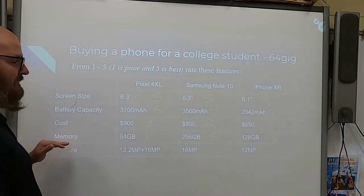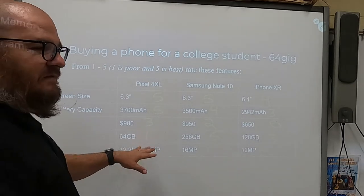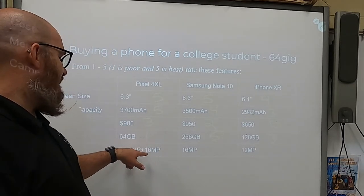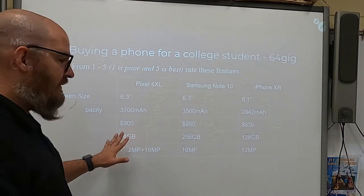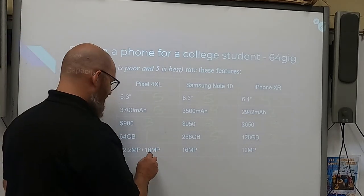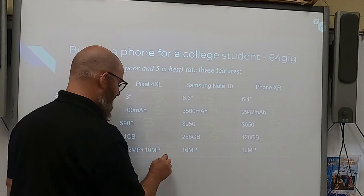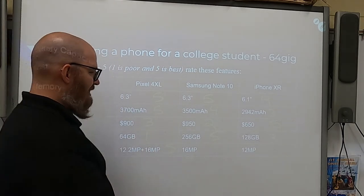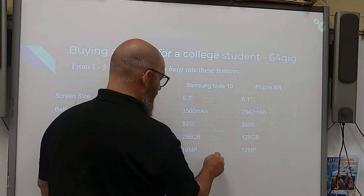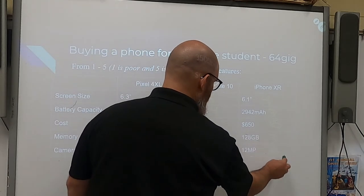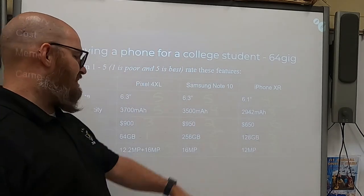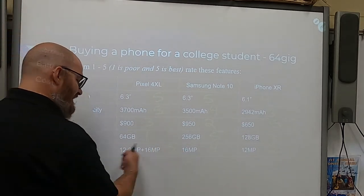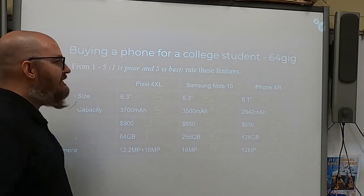Last thing: camera. Megapixels is millions of pixels. One of these actually has two cameras — you could probably do 3D with it. 16 megapixels gets a five, along with the dual-camera phone, that's also a five. We'll give the next one a four. And 12 megapixels gets a two, because it's pretty far off from 16 megapixels and it should have two cameras.